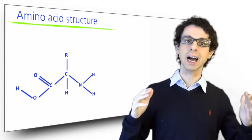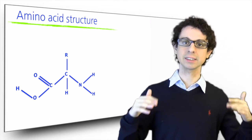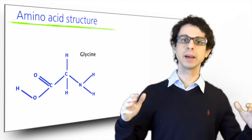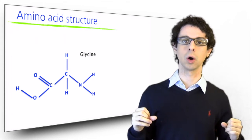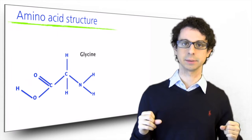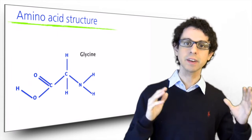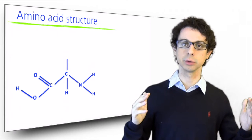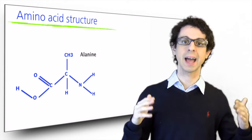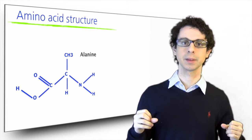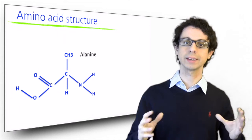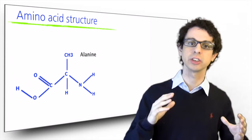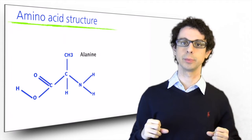For example, if the side group is just an atom of hydrogen, we have made the simplest amino acid of all: glycine. If instead of hydrogen we put there a methyl group, we have made alanine. And so on — we can build all 20 different amino acids by changing that side group.